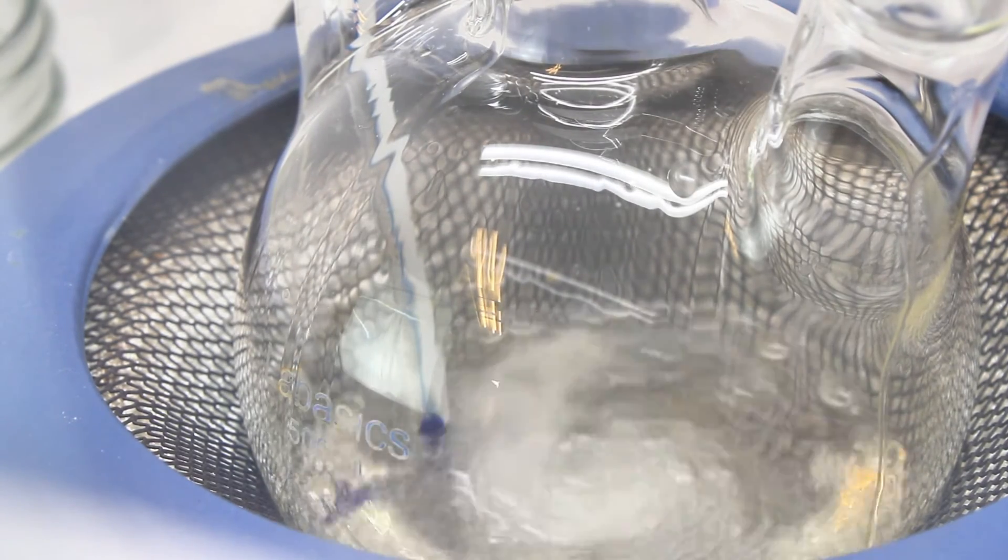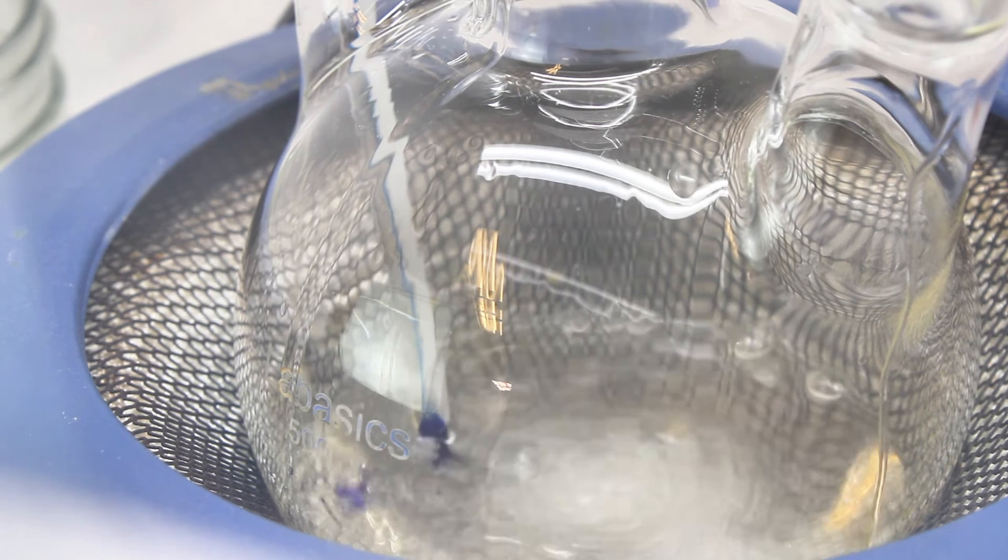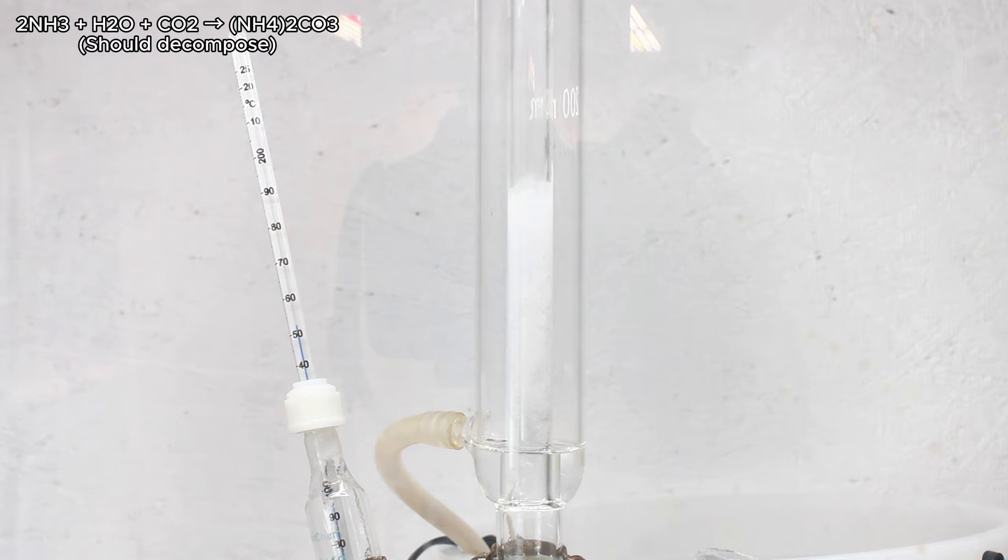However, ammonia and carbon dioxide can also directly react forming ammonium carbonate, which is a salt with a much higher melting point than acetamide, so even if it does form it should be fairly easy to separate.